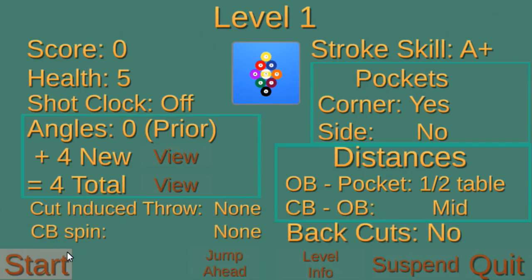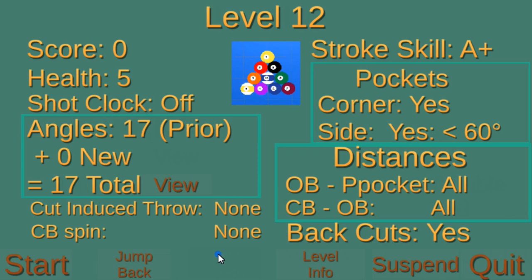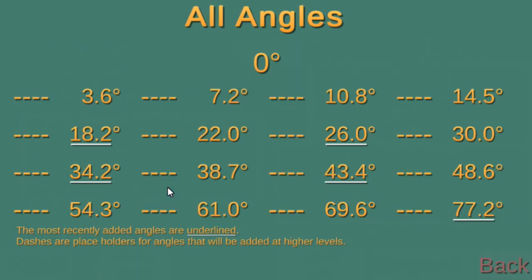Notice that there's no cut-induced throw, so the quiz is asking you for the exact geometric angle without any throw compensation for now. Let's look at the cut angle choices. So what gives with the weird angles? These are the angles that result from standard ball hit fractions — in this case, sixteenths. Geometrically, this gives us equal aiming increments, and I think that's a good thing.